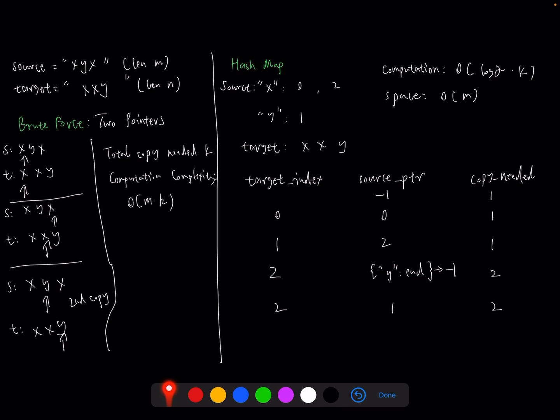For example, we first iterate from X in source and see whether it has a corresponding character. Here we find one. Then we both move to the second one of source and the second target. Since the second index of source is not the same character as the second point of target, we continue moving the pointer of source to the third index like here.